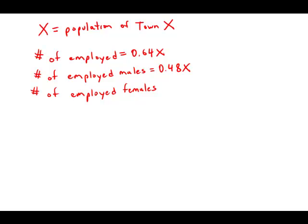The total number of employed people equals the number of males plus the number of females. So we subtract these two to get the number of females. .64X minus .48X equals .16X.